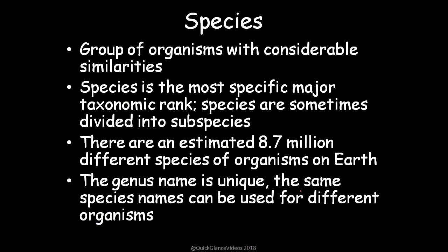Species is at the top of the pyramid where the most similarities and uniqueness converge for any organism. It is a group of organisms with considerable similarities, very close to each other. Species are the most specific major taxonomic rank and are sometimes divided into subspecies. There are an estimated 8.7 million different species of organisms on Earth, and this number keeps increasing as new species are discovered. The genus name is unique, while the same species name can be given to different organisms.